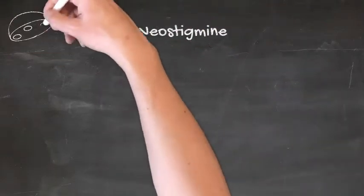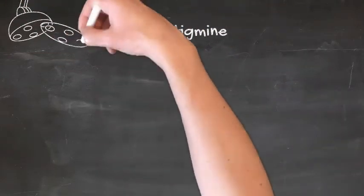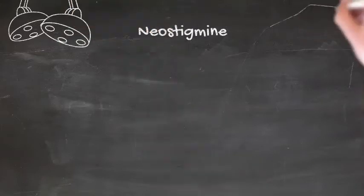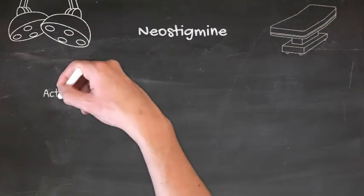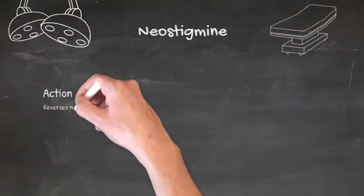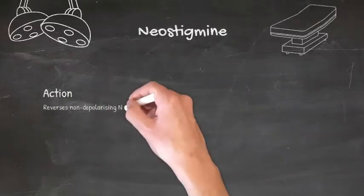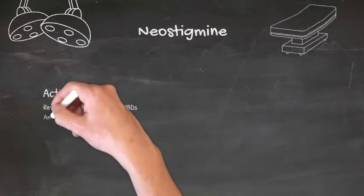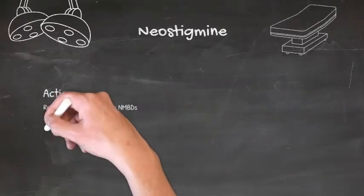We'll first discuss neostigmine. For the purposes of anaesthesia, neostigmine is used as a reversal agent for non-depolarising neuromuscular blocking drugs, and it's only ever given in combination with glycopyrrolate, for reasons we'll discuss in a moment.